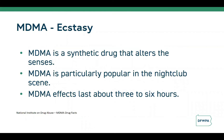MDMA is chemically similar to both stimulants and hallucinogens, producing feelings of increased energy, pleasure, emotional warmth, and distorted sensory and time perception. MDMA increases the activity of three brain chemicals: dopamine, which produces increased energy and activity and reinforces behaviors in the reward system; norepinephrine, which increases heart rate and blood pressure and is particularly risky for people with heart and blood vessel problems; and serotonin, which affects mood, appetite, sleep, and other functions, and triggers hormones affecting sexual arousal and trust. The release of large amounts of serotonin likely causes the emotional closeness, elevated mood, and empathy felt by those who use MDMA.